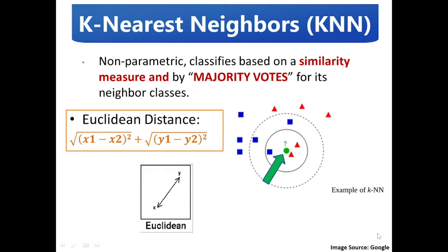In the figure, the test sample green circle should be classified either to the first class blue square or to the second class red triangle. If k equals 3, it is assigned to the second class red triangle because there are two triangles and only one square inside the inner circle. If k equals 5, it is assigned to the first class blue square because it contains three squares inside the outer circle.